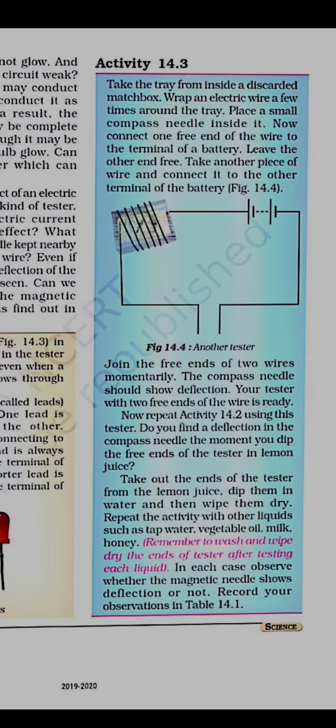The first activity uses a tray coming out from the matchbox. On wrapping a few wires on that matchbox strip and connecting it to the tester, if there is a current in any circuit, there will be a deflection in the compass needle. If you take the compass near a current-carrying wire, it will deflect — this is the magnetic effect of current.